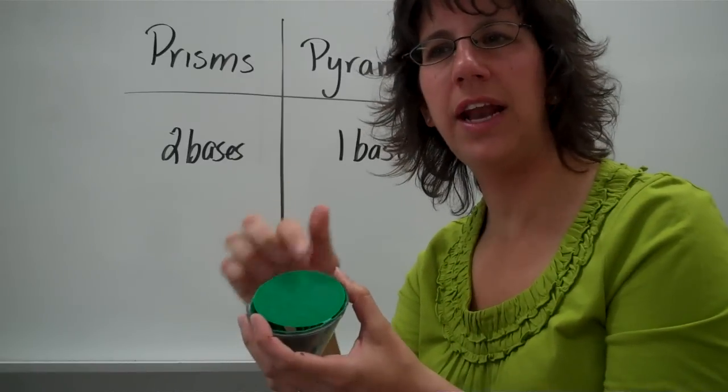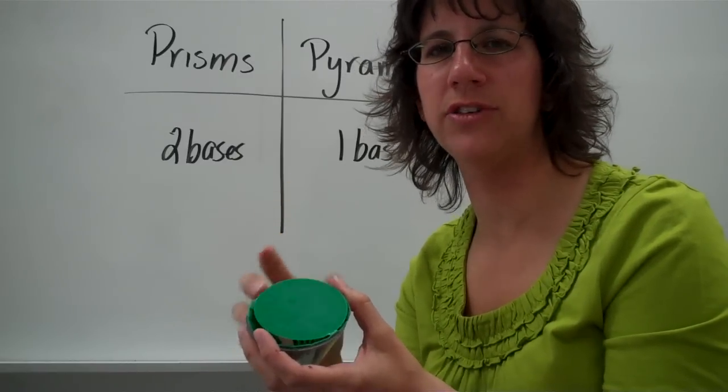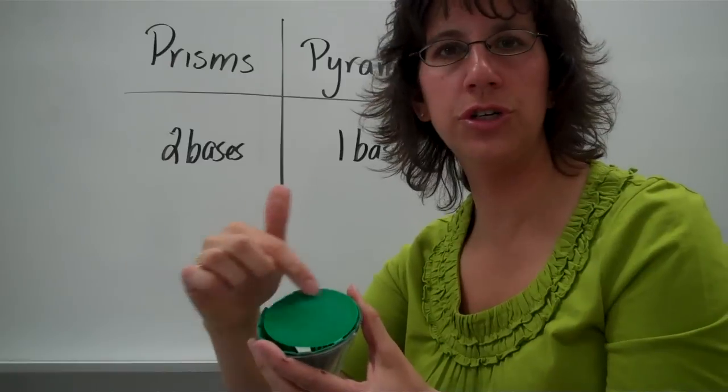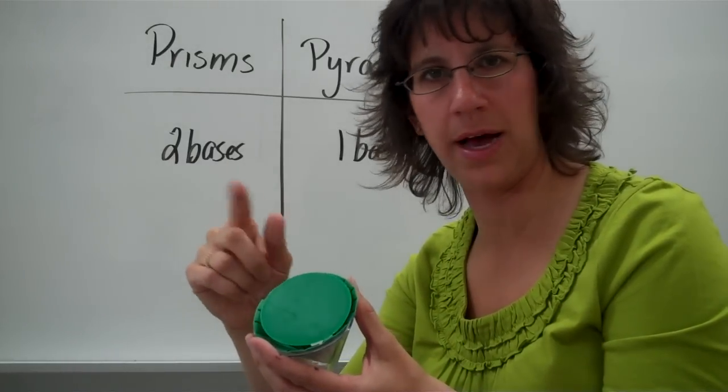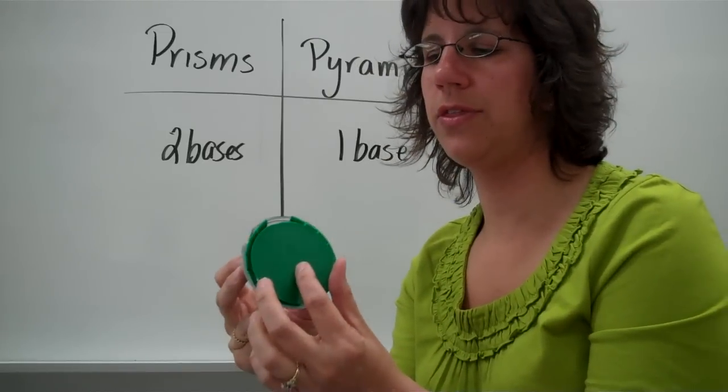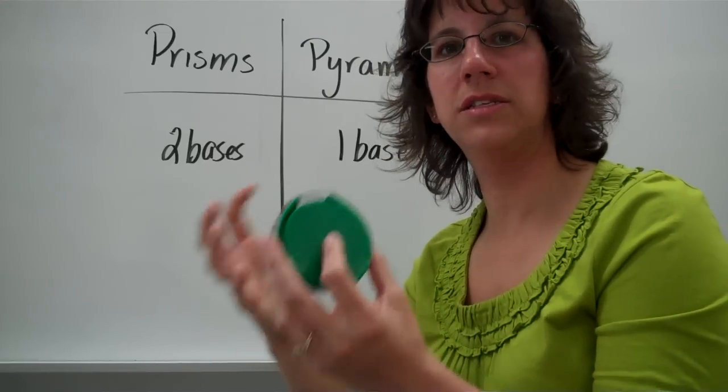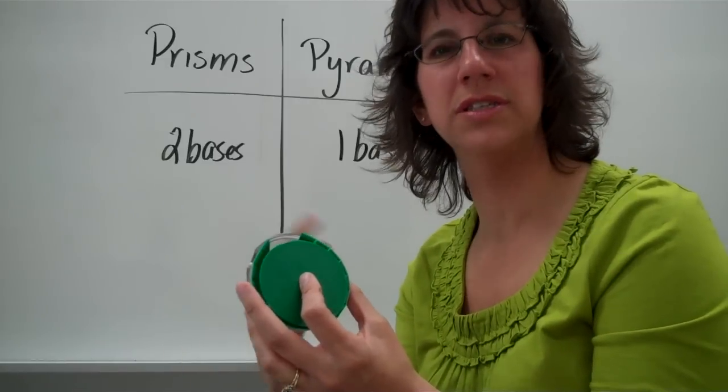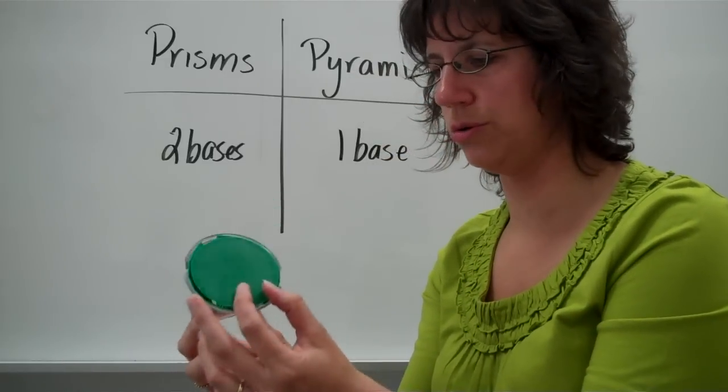And it has a special name because it has that special shape on the bottom. Circles are such special shapes that anything revolving around a circle will have a special name. Circles have special formulas with the pi. We've got a special kind of pyramid called a cone.